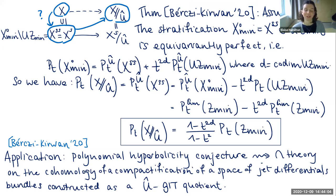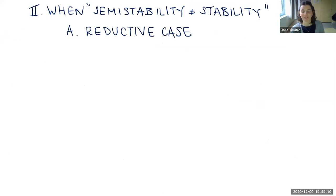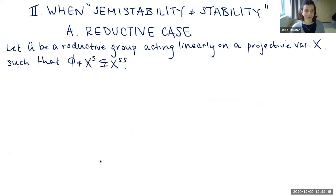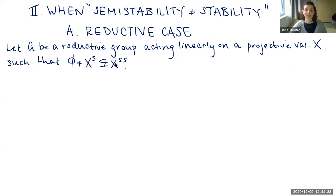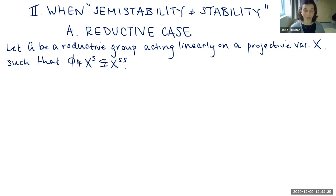Now I'll talk about the case where semi-stability is not equal to stability, starting with the reductive case. The data is a reductive group G acting linearly on a projective variety X, and now I assume the stable locus is strictly contained in the semi-stable locus. I also assume the stable locus is not empty — there is at least one stable point. Even if X is smooth, the presence of strictly semi-stable points means the quotient can have very bad singularities.